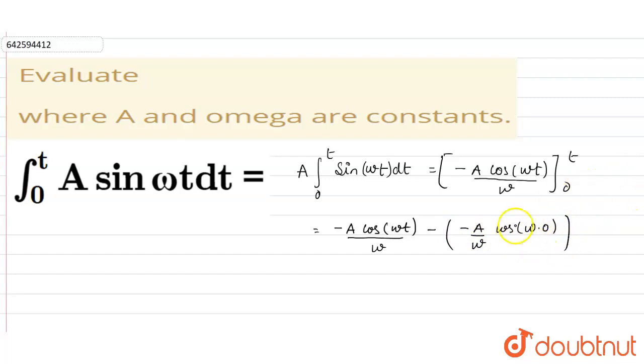Now cos 0 is 1, so this value becomes 1. Now what we will get is -A cos ωt/ω